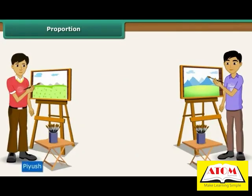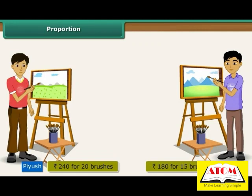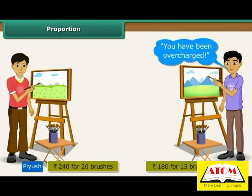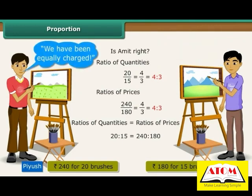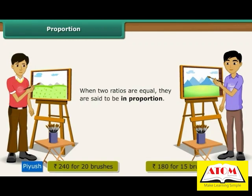Proportion: Piyush bought 20 paint brushes for Rs. 240 and Amit bought 15 identical brushes for Rs. 180 from the same shop. Amit claims that the shopkeeper overcharged Piyush. The ratio of quantities is 4 is to 3, and the ratio of prices is also 4 is to 3. Since the ratio of quantities equals the ratio of prices, Amit's claim is wrong. The shopkeeper charged both the same price. When two ratios are equal, they are said to be in proportion.